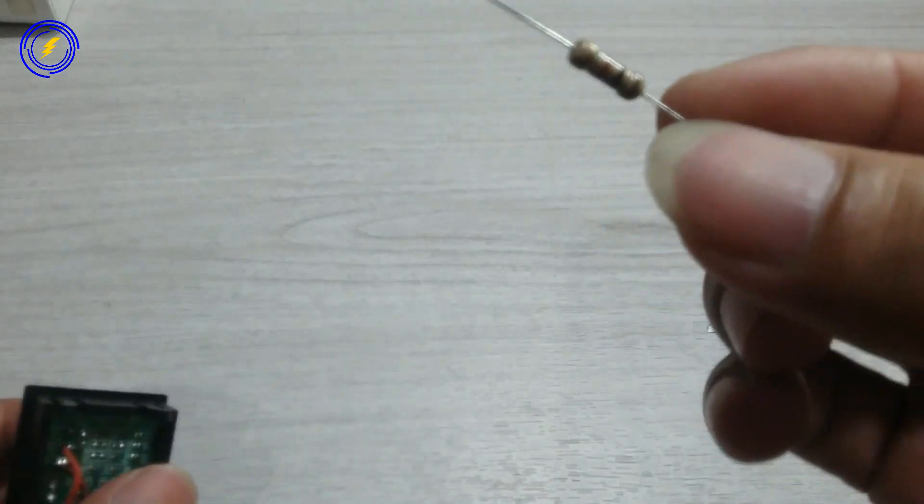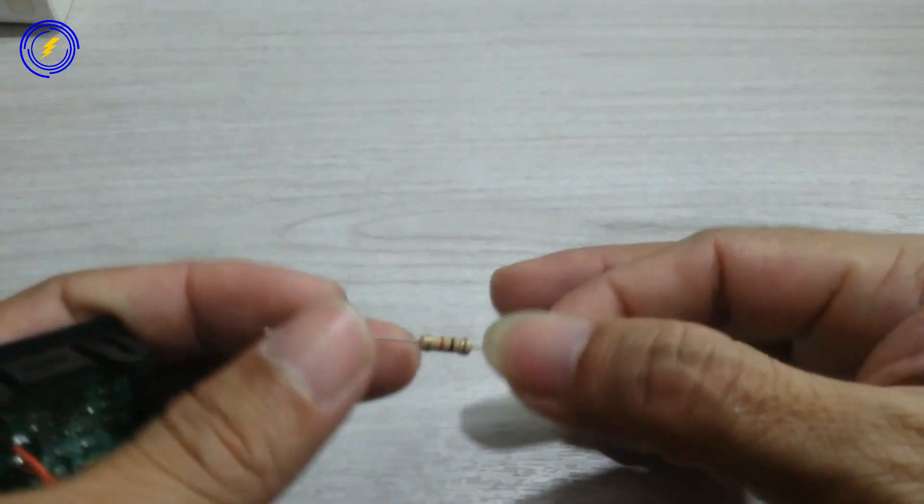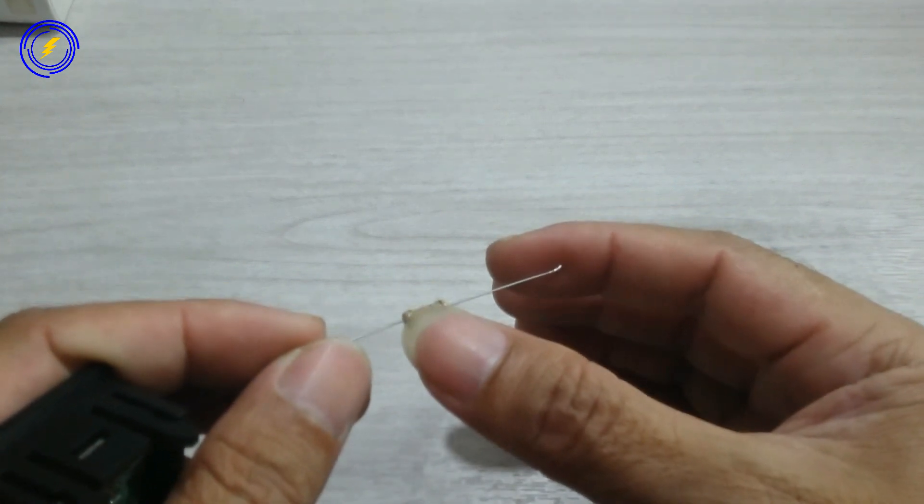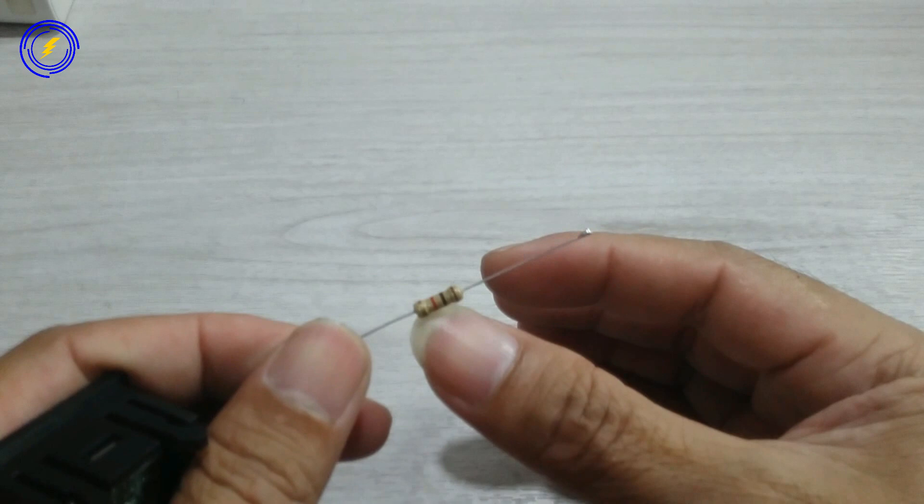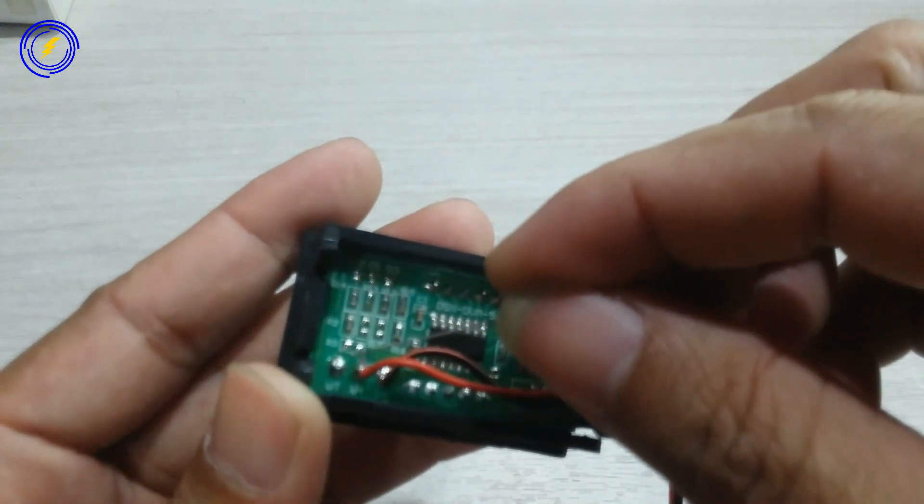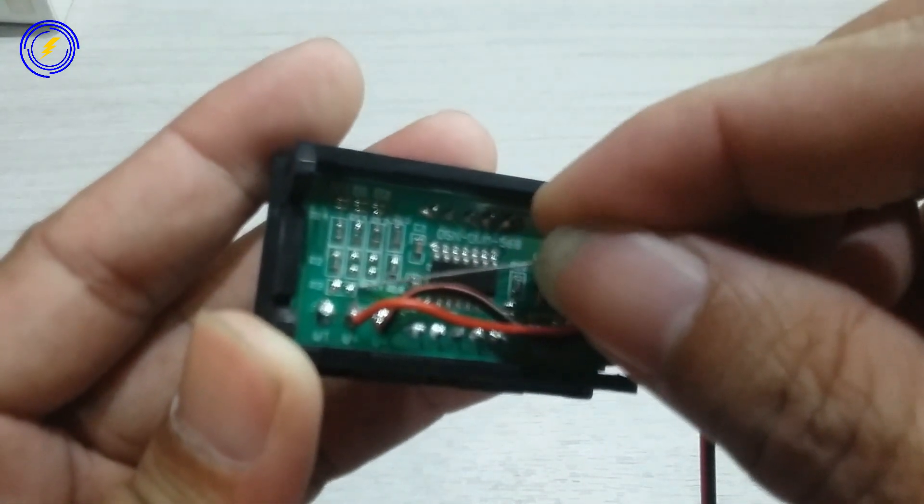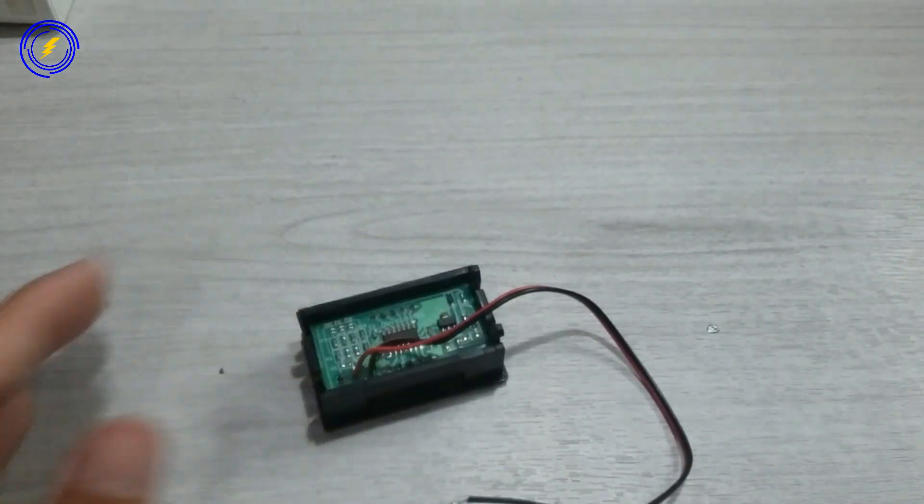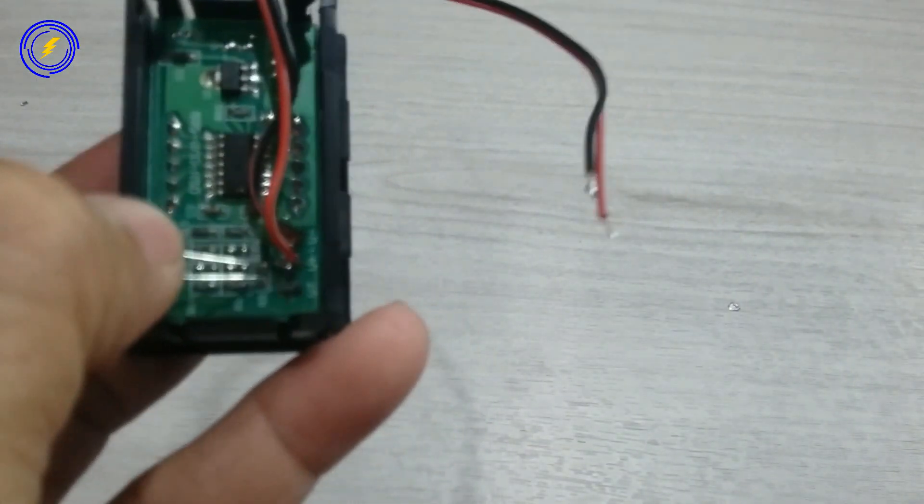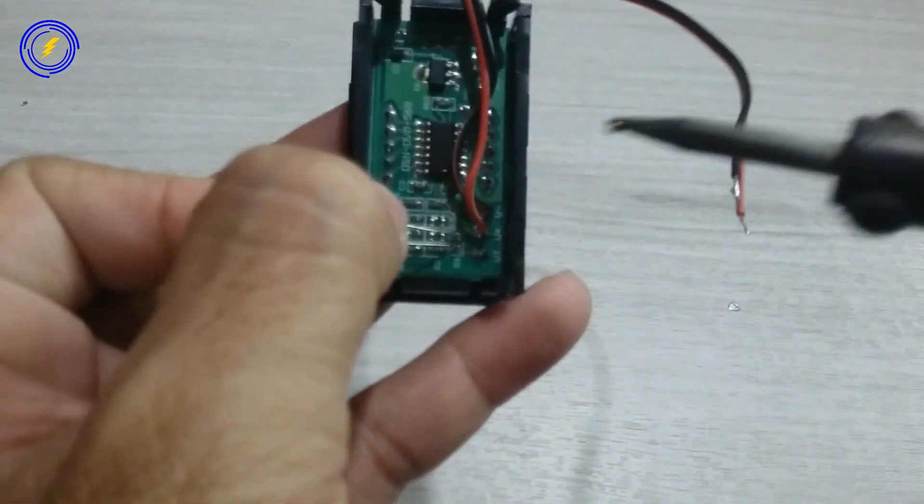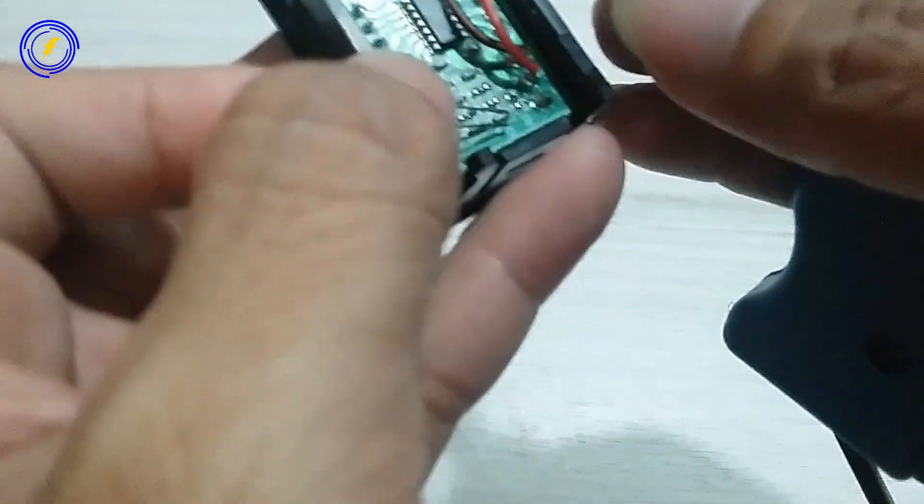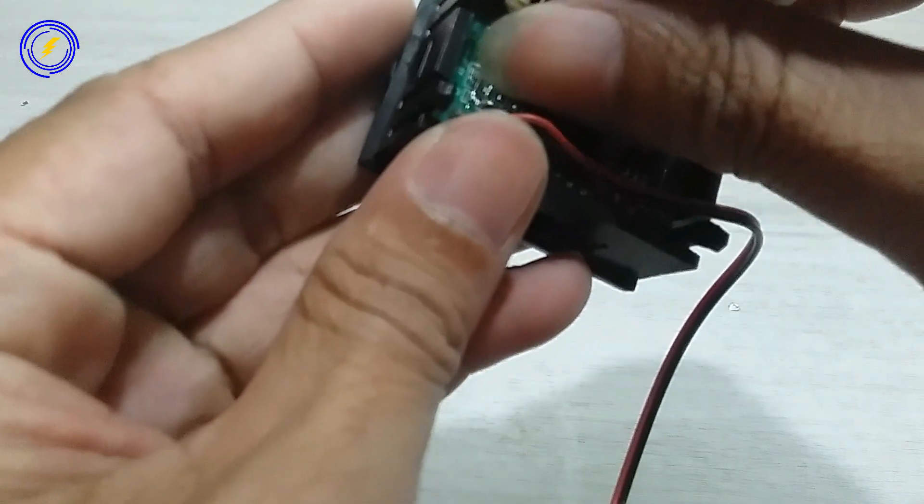Kita akan memasang resistor 1 kilo ohm ini di tempat yang tadi, di tempat resistor SMD-nya. Di sini dan di sini. Kita solder dulu. Hati-hati. Sudah terpasang seperti ini.